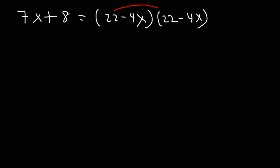To FOIL this, we're going to multiply 22 by 22, which is 484. Next, we're going to multiply 22 by negative 4x, so that's negative 88x. And then negative 4x times 22, that's going to be the same. And then finally, negative 4x times negative 4x, which is positive 16x squared.